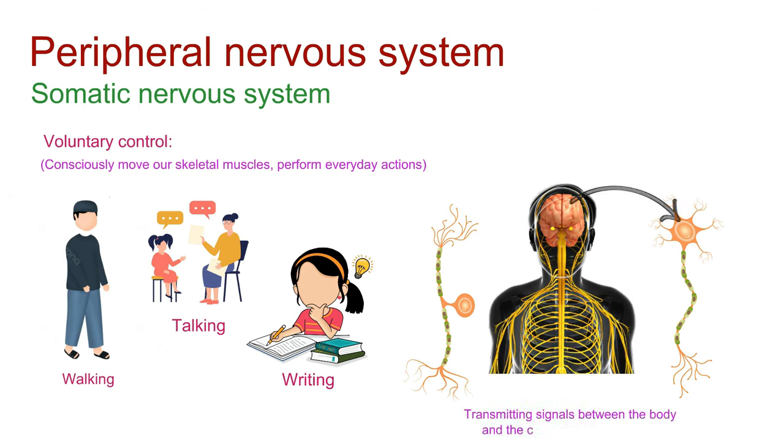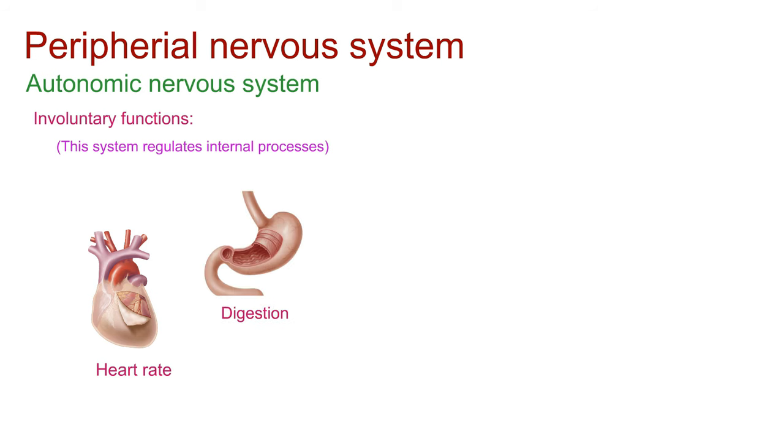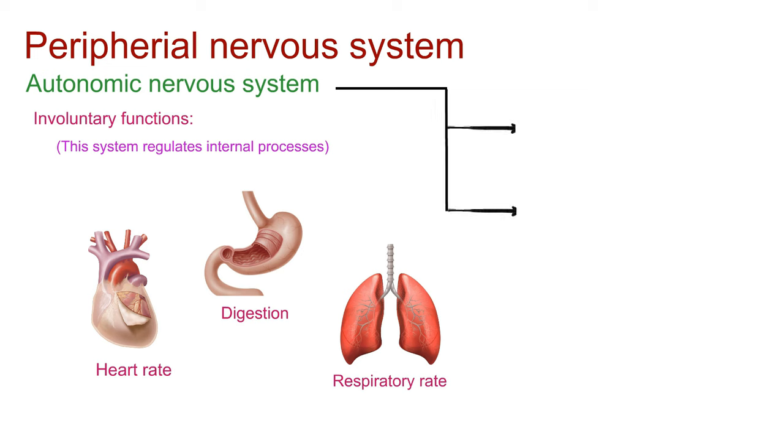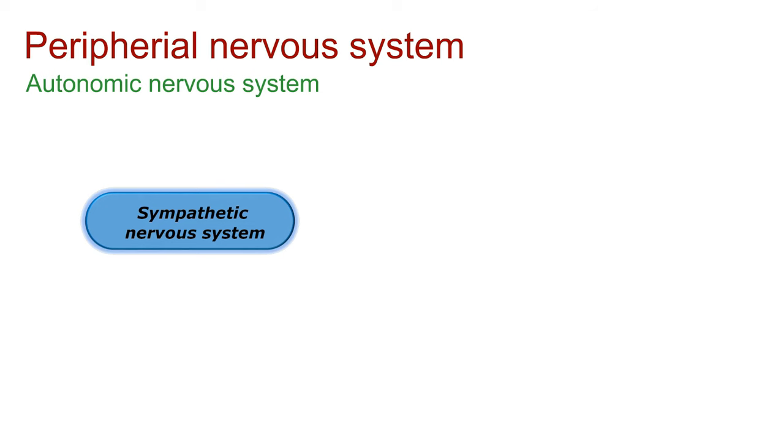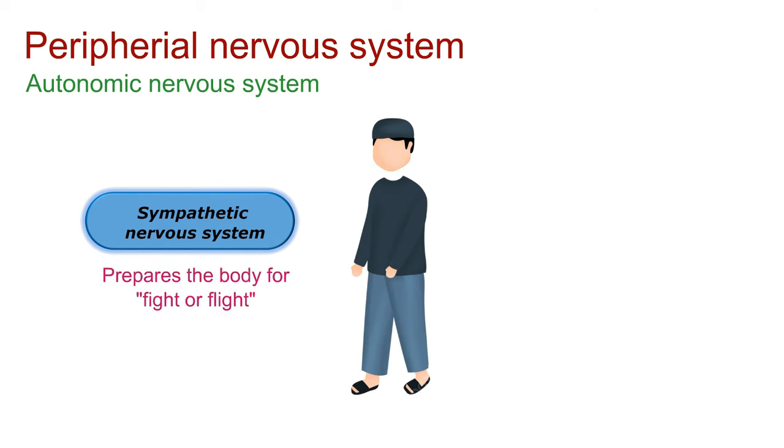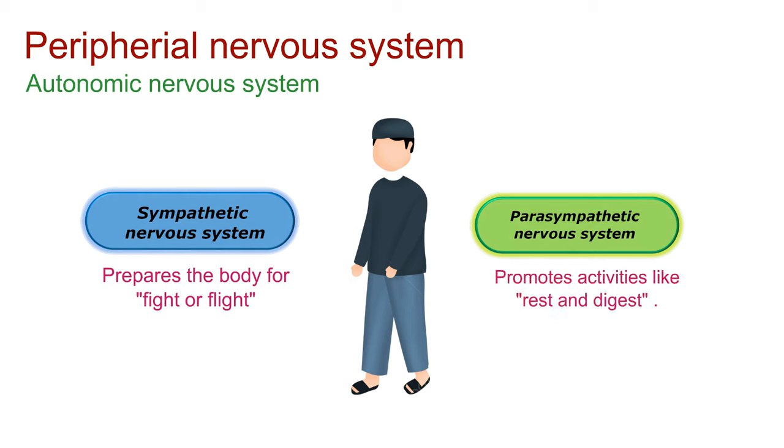Moving on to the autonomic nervous system, it takes care of involuntary bodily functions. Forget about conscious effort. This system regulates processes like heart rate, digestion, and respiratory rate. Within the autonomic nervous system, we have the sympathetic and parasympathetic divisions, which often have opposing effects on target organs. The sympathetic division prepares the body for fight or flight responses, while the parasympathetic division promotes rest and digest activities.